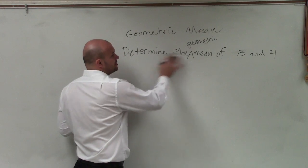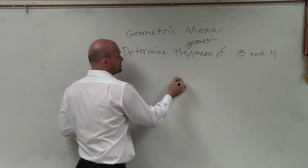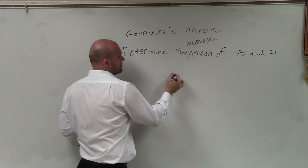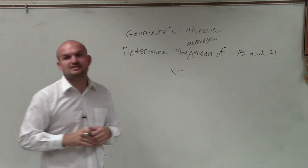So therefore, we have these two. Geometric mean is going to be the square root. It's when your means are the same.